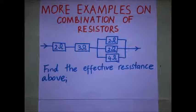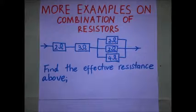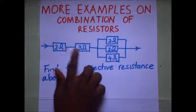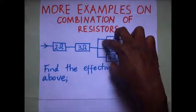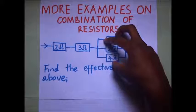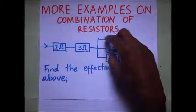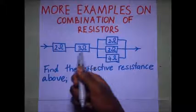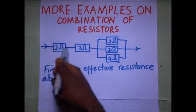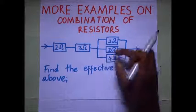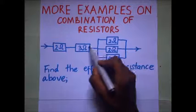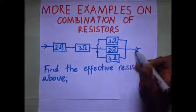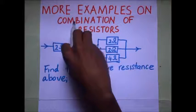We have these two resistors which are in series with this combination, so we need to first break down this to make it easier. We have these two resistors in series, and since current is coming like this, this is in series with this. But these three resistors are in parallel because the current splits — some going there, there, and there.